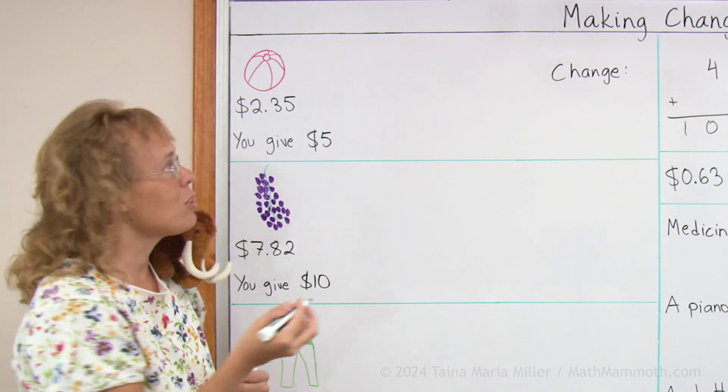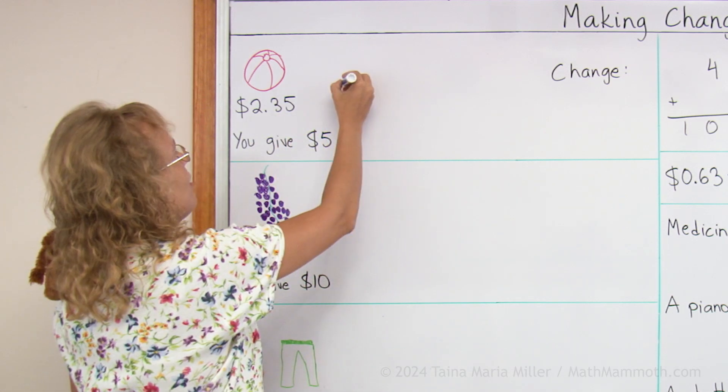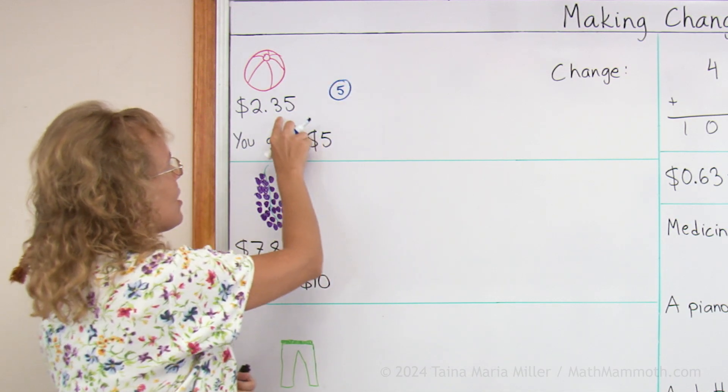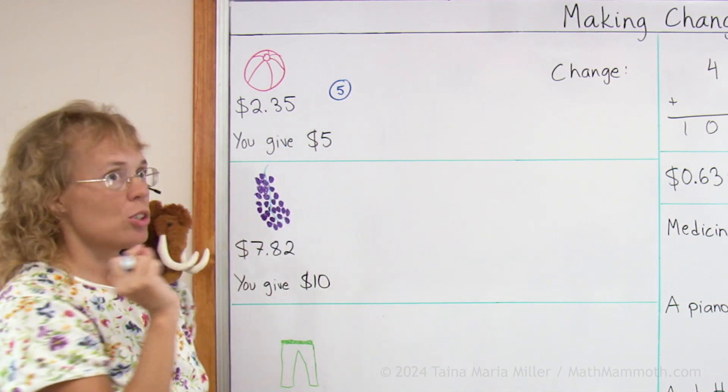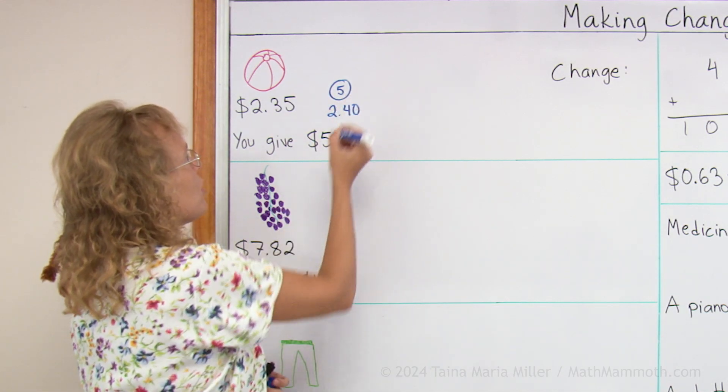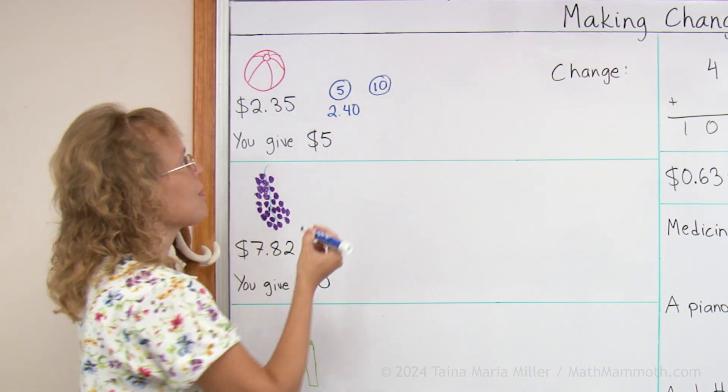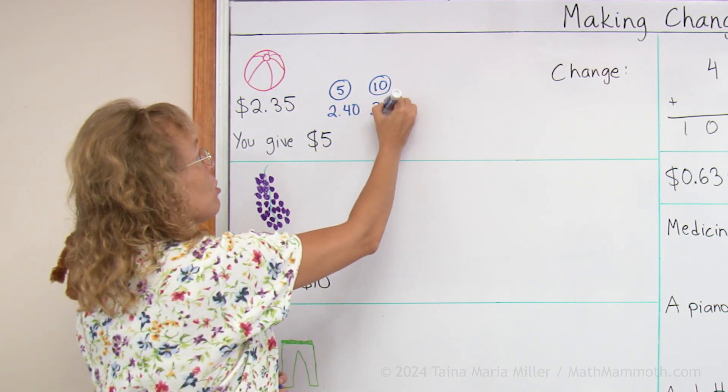I basically think of the coins I would use. For example, $2.35. Let's say that I add 5 cents to that. Then I would have $2.40, right? After that I would have $2.40. And then I would add 10 cents. And after that I would have $2.50.